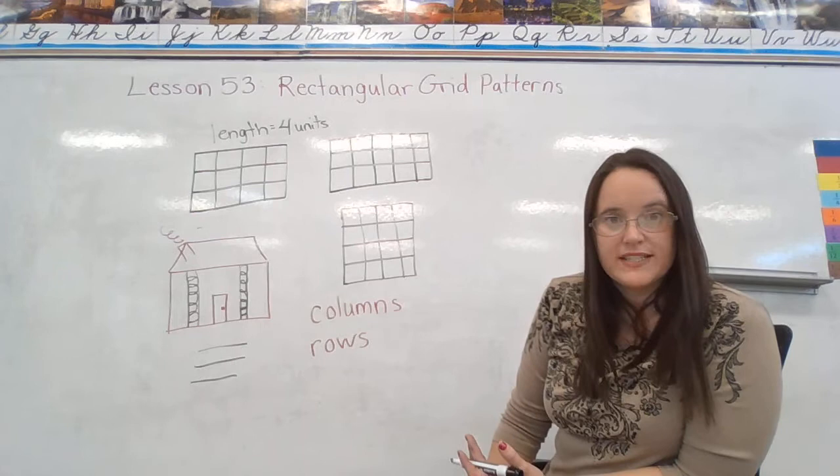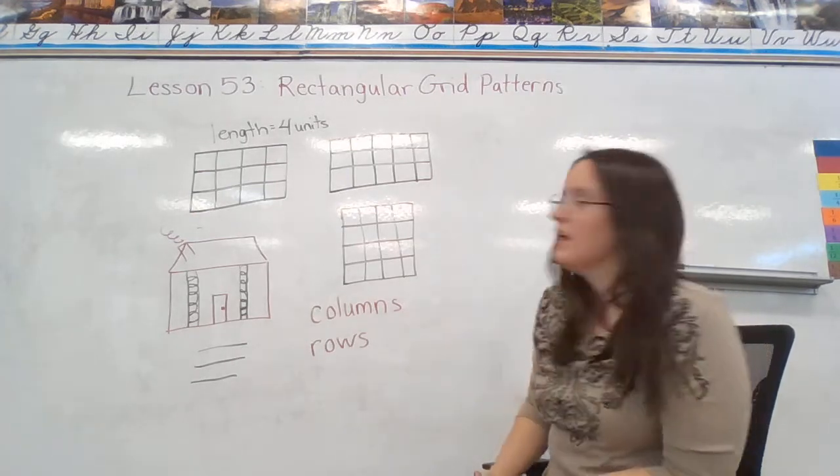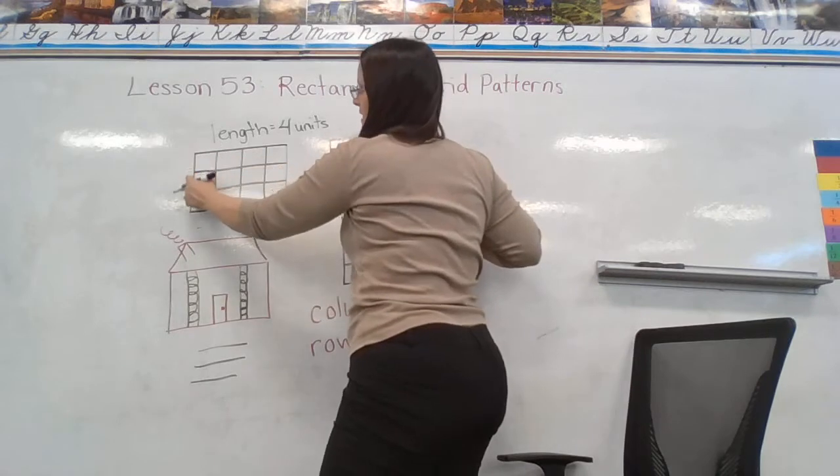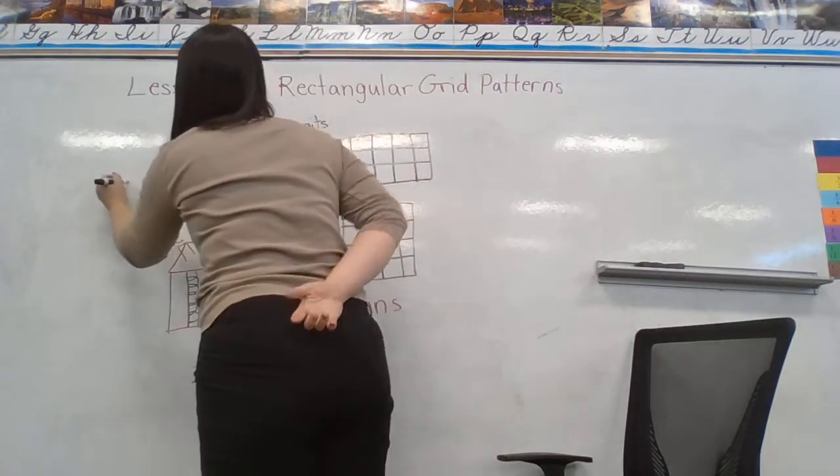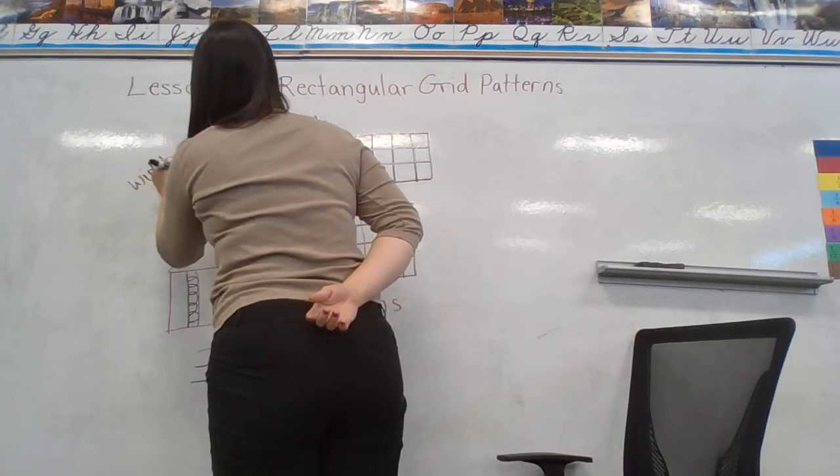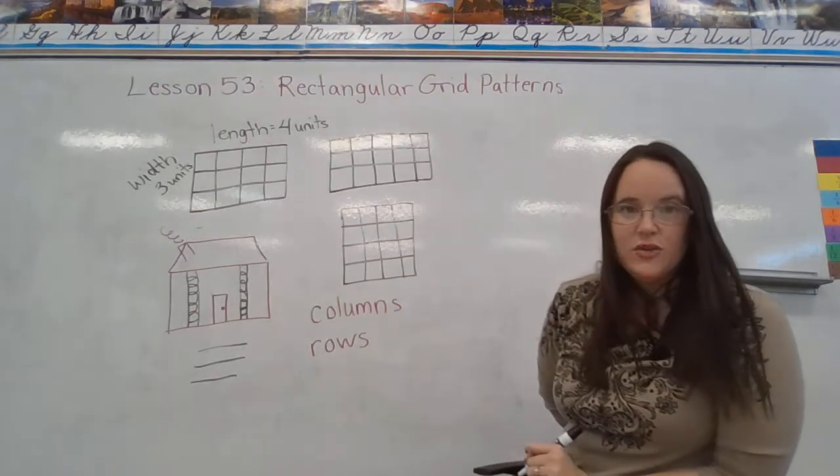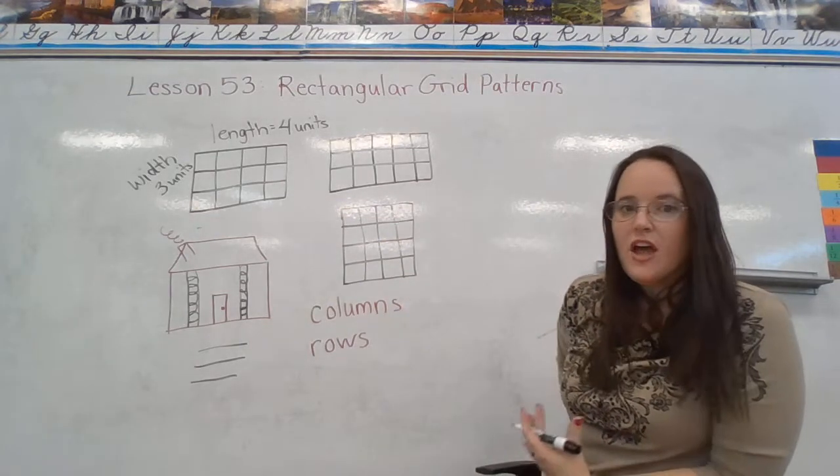Second question is, what is the width? We do the same thing going down the column. So one, two, three. Our width is three units.